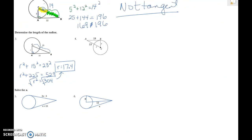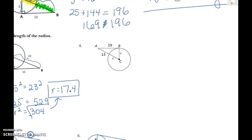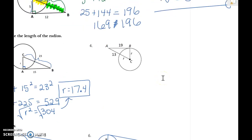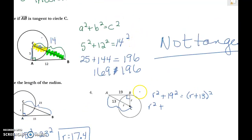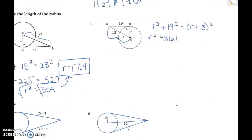For the next problem, set up the right triangle: the two legs are r and 19, and the hypotenuse is the whole distance, which is r + 13. So the equation is r² + 19² = (r + 13)². We need to expand (r + 13)², so I'll do r plus 13, squared.